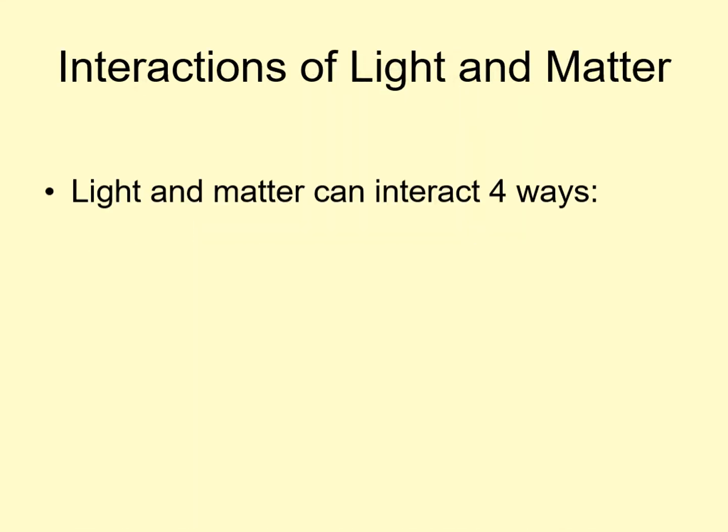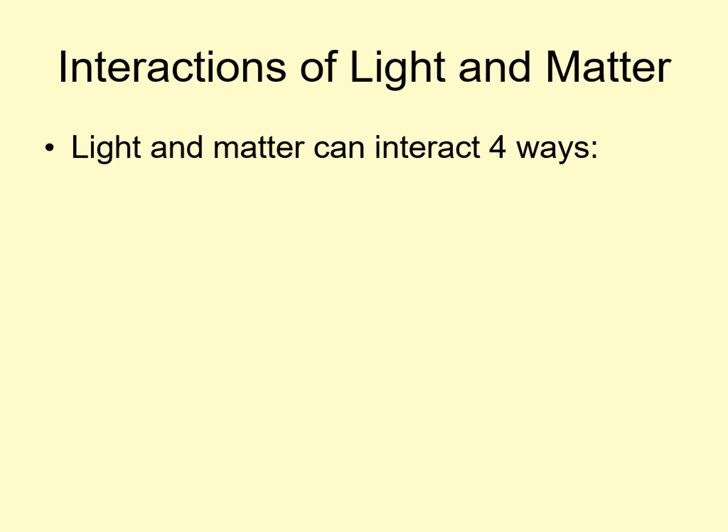Light and matter can interact with each other in four basic ways. First, matter can absorb light. When this happens, the light hits the matter and stops. The photon's energy is converted to some other form, like heat.